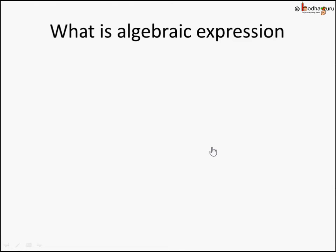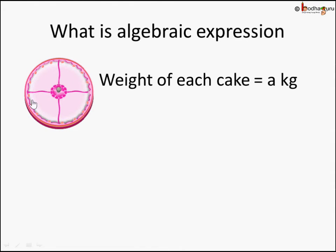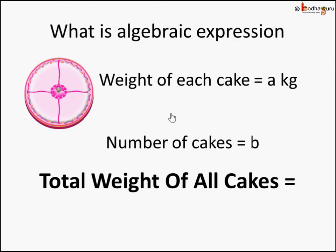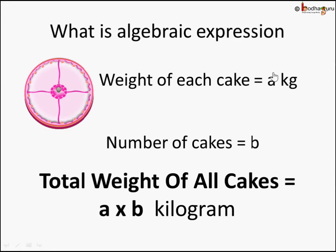Let us take another example of an algebraic expression. Let us say there is a strawberry cake and the weight of each cake is 'a' kg — a variable. The number of cakes ordered for a big party is 'b'. The total weight across all the cakes would be a into b kilograms, or simply 'ab' kg. These are simple examples of algebraic expressions having constants and variables like a, b, x, y, p, q.